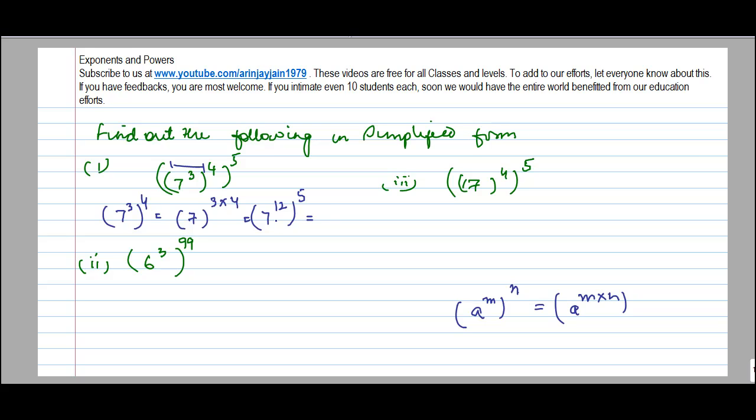So I have solved this part but this is again to the power 5. Now again this has become in the form a to the power m to the power n. So this can be written as 7 to the 12 into 5 is equal to 16. This is your answer.